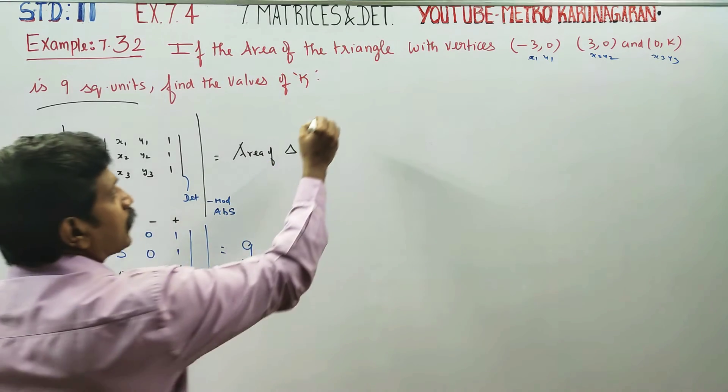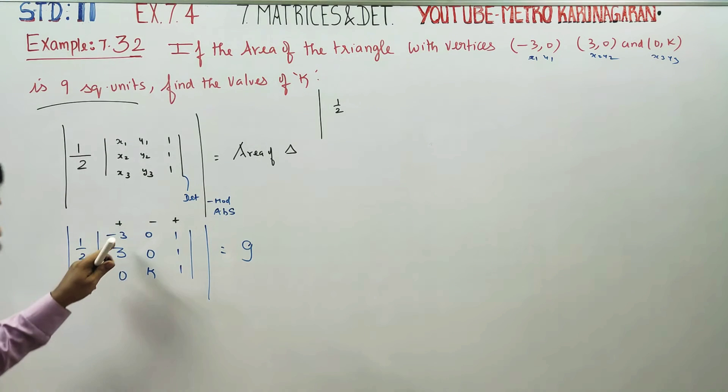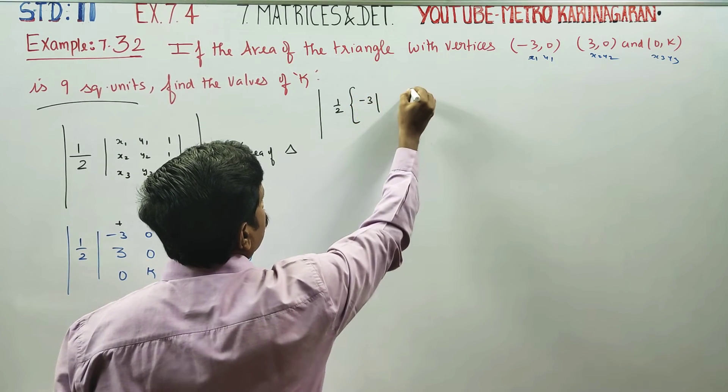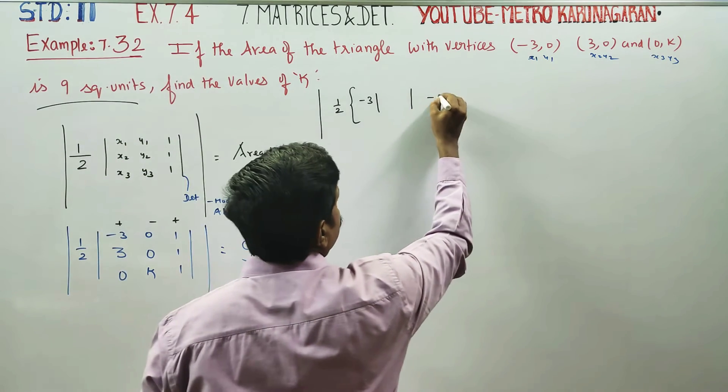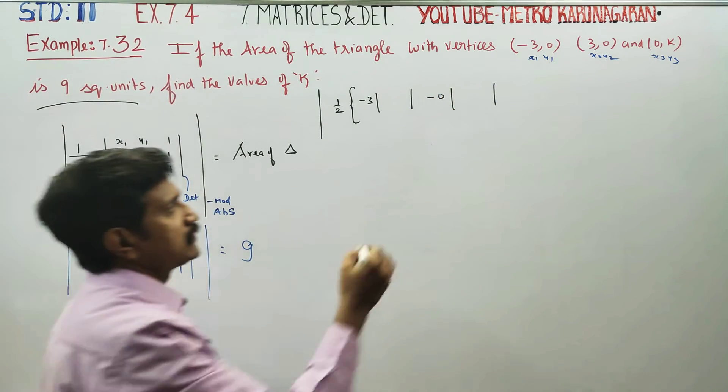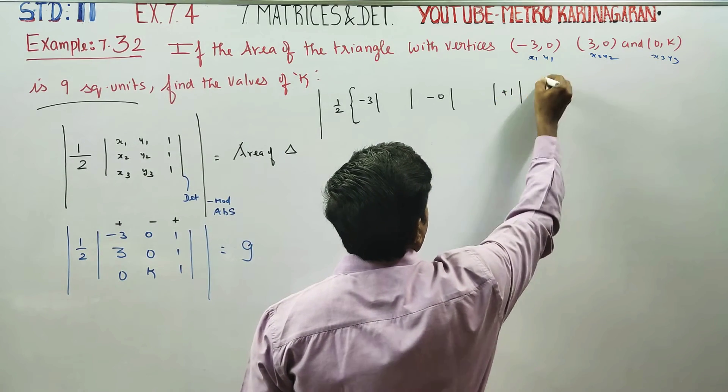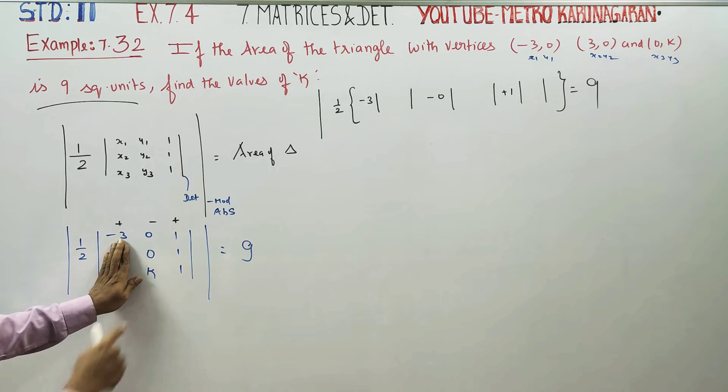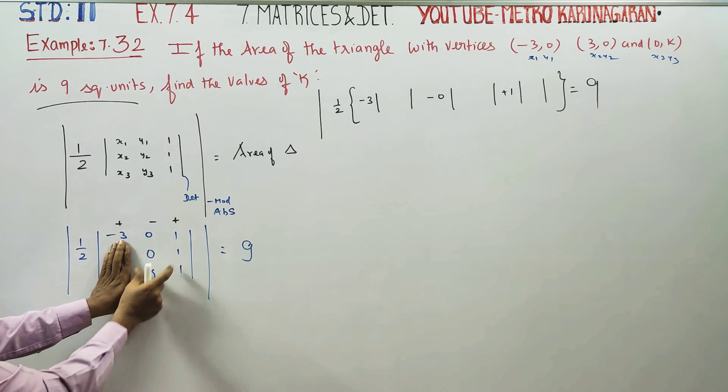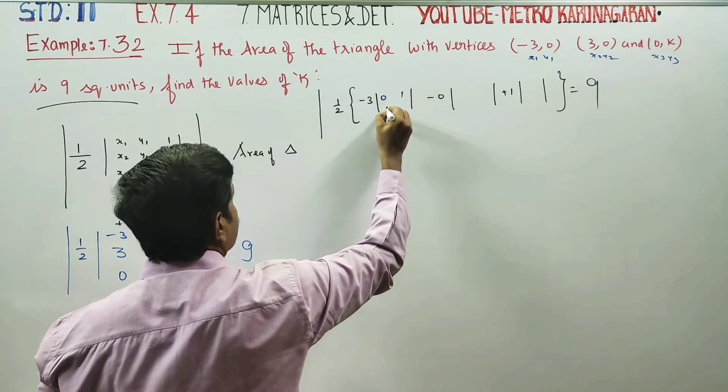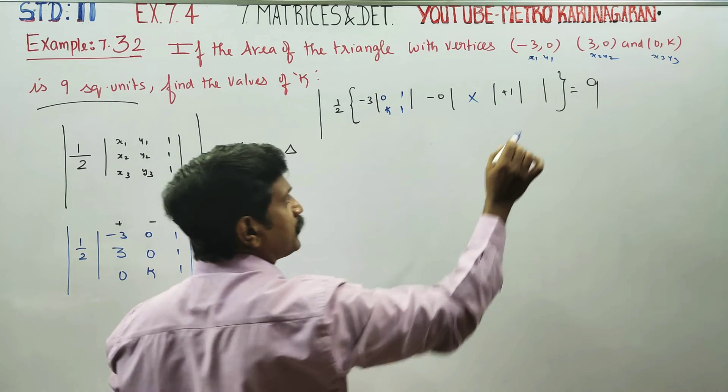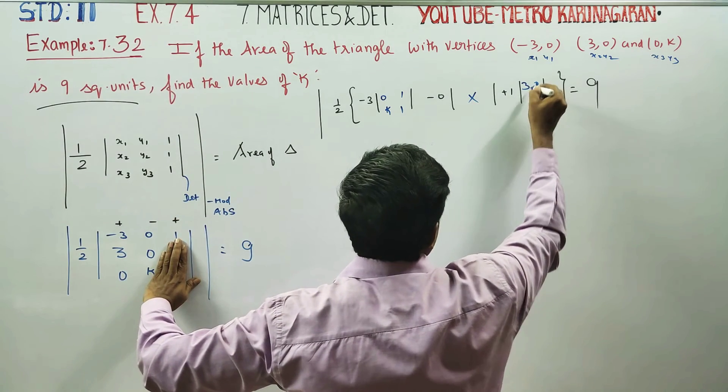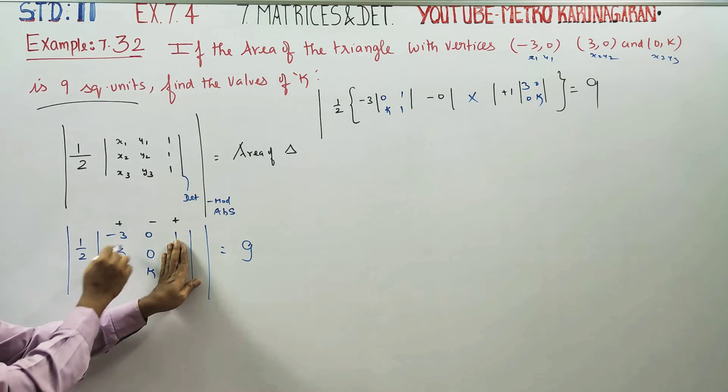1 by 2 absolute value minus 3 into minus 0 into minus 1. This equals 9. 0, 1, k, 1. 0 into anything is 0, 1 k minus. Minus 3, 0, 0k. 3, 0, 0k.